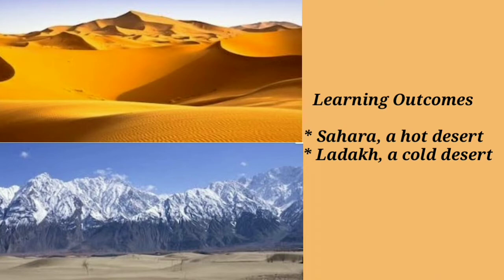Deserts can be classified by the amount of precipitation, temperature, causes of desertification, and geographical location. Broadly speaking, deserts are categorized as hot desert and cold desert. Hot deserts like the Sahara Desert are found in the tropical regions. Cold deserts like Ladakh are found in polar regions or at a high altitude of temperate regions.